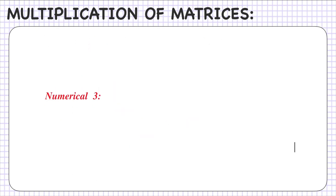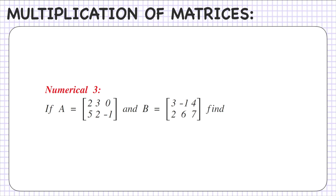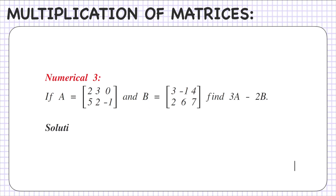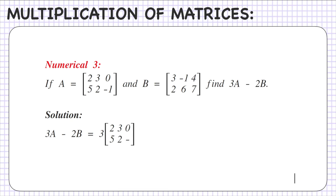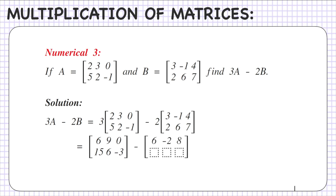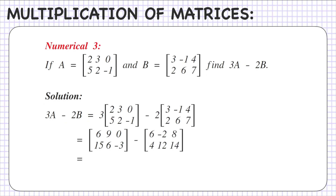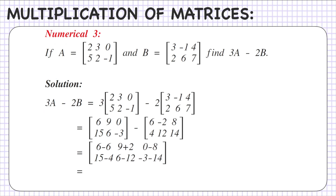Another example: if A equals [2, 3, 0; 5, 2, -1] and B equals [3, -1, 4; 2, 6, 7], find 3A - 2B. So 3A - 2B equals 3×[2, 3, 0; 5, 2, -1] minus 2×[3, -1, 4; 2, 6, 7]. Multiplying gives [6, 9, 0; 15, 6, -3] minus [6, -2, 8; 4, 12, 14], which equals [0, 11, -8; 11, -6, -17].